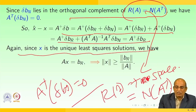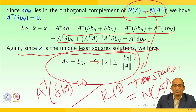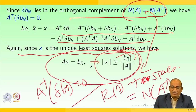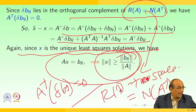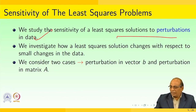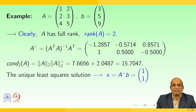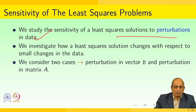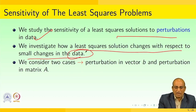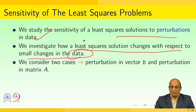Since X is the unique least square solution and A X equals B_R, we can write that the norm of X is greater than or equal to norm of B_R divided by norm of A. Perturbation in data causes changes in the least square solution, and the condition number governs how large those changes can be. We consider both perturbation in vector B and perturbation in matrix A.